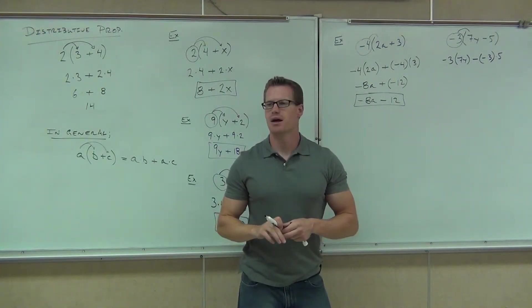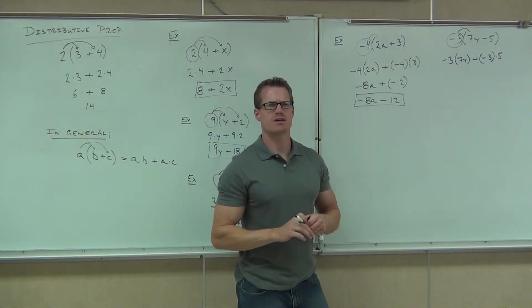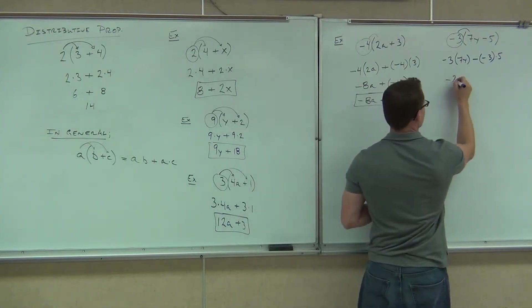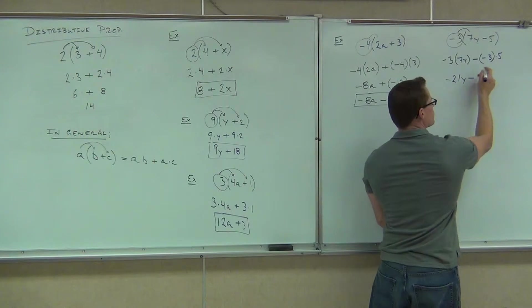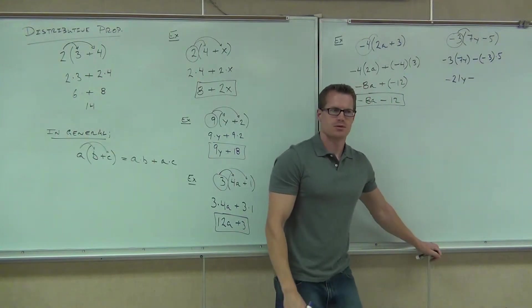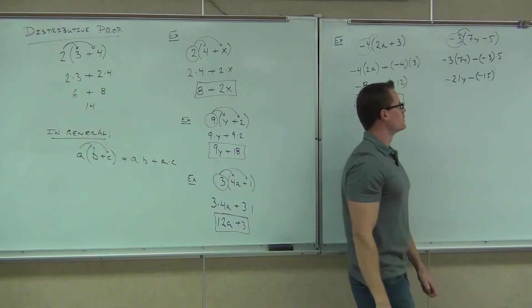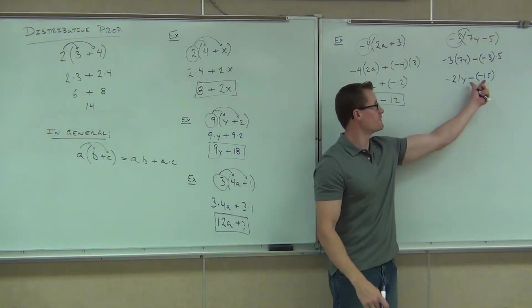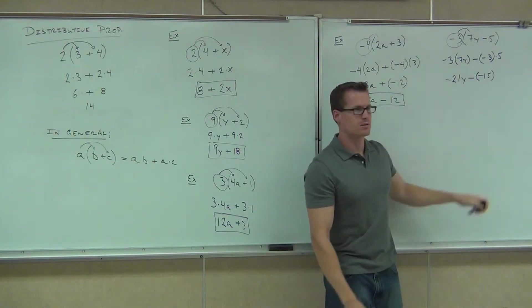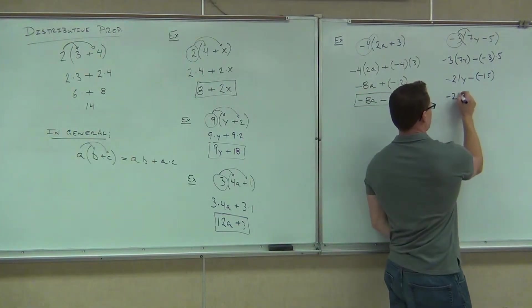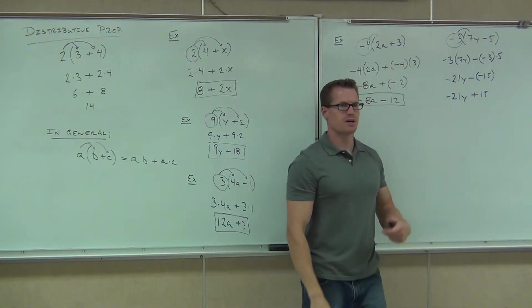So negative 3 times 7y minus negative 3 times 5. Let's do the math now. So what's our negative 3 times 7y? Can you all tell me negative 3 times 7y? What is that? Negative 21y. Then we're going to have minus, what's negative 3 times 5? Negative 15. Tell me something. Wouldn't that be positive as negative? Sure. So should I leave it as minus and negative? Plus. We're going to make that plus.